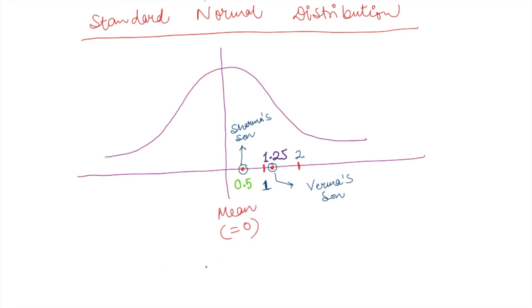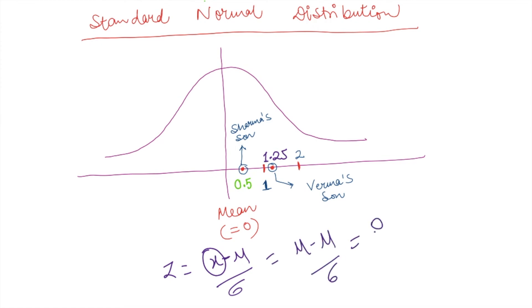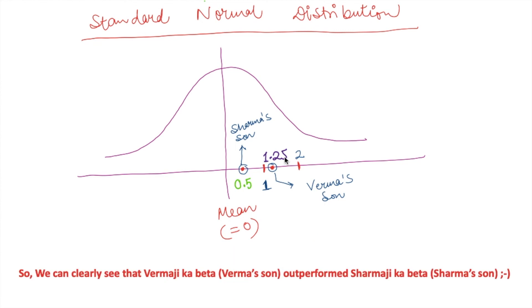Now we have a standard normal distribution with mean equal to 0. Why is mean equal to 0? As discussed, Z-score is (X − μ) / σ; when X is the mean itself, it becomes (μ − μ) / σ = 0/σ = 0. Plotting both scores: Sharmaji's son is at 0.5 and Wamaji's son is at 1.25 on the standard normal distribution. This clearly shows that Wamaji's son outperformed Sharmaji's son — which gives you a key reason why we need to standardize, or convert a normal distribution into a standard normal distribution.